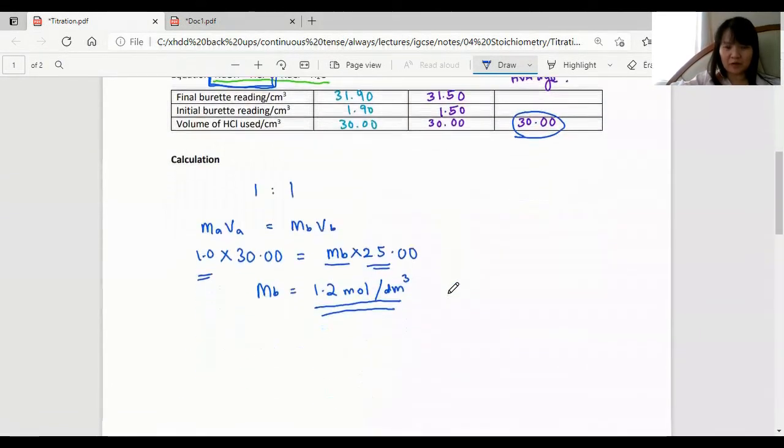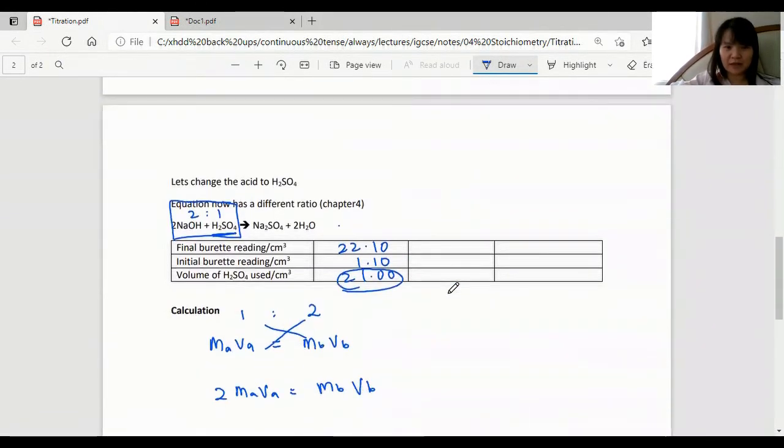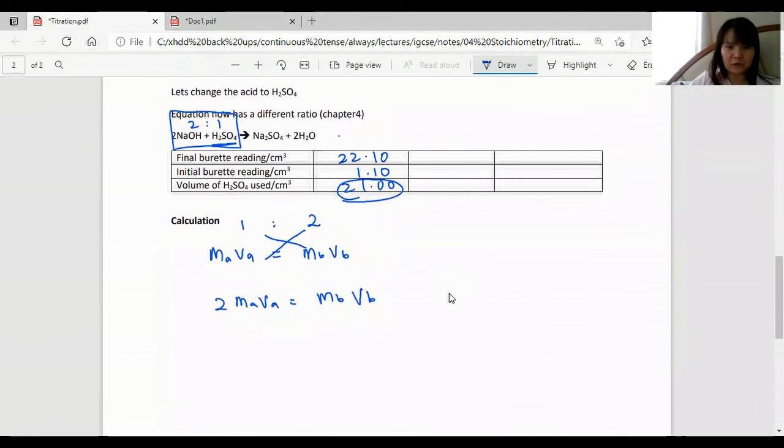So 1 mole per dm cubed of acid, but not HCl this time, H2SO4 volume.